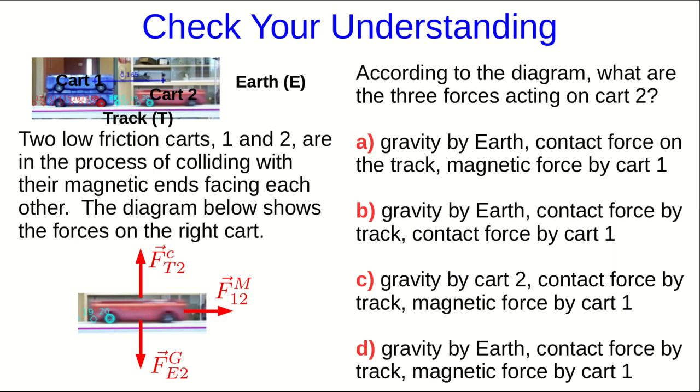And so let's just make sure you can read my symbols. So let's think about two carts in the process of colliding with their magnetic ends. And so I have shown you a correct diagram of the forces acting on the right cart. That's cart 2. And so now, I've told you the Earth is E, and cart 1 will be 1, and cart 2 will be 2, and the track will be T. So those are symbols I'm using to represent objects and targets. And now, according to the diagram I've drawn, what are the forces acting on cart 2?